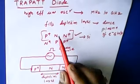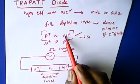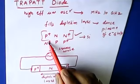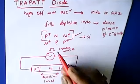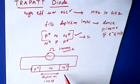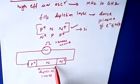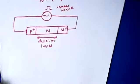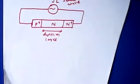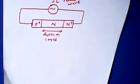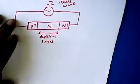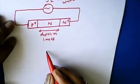The combination used to fabricate the TRAPATT diode is P+ N and N+, or alternatively N+ P and P+. Either combination can be used to design a TRAPATT diode, and we will look at the characteristics including the plasma formation.